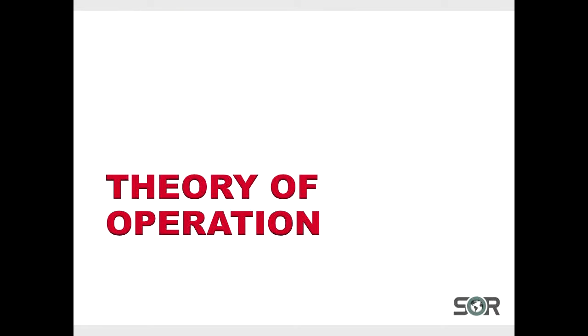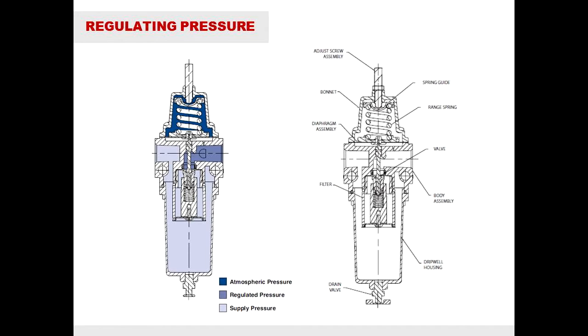Now, how does the 1267 AFR actually work? The process material enters the 1267 on the left inlet process connection and fills the supply pressure housing.